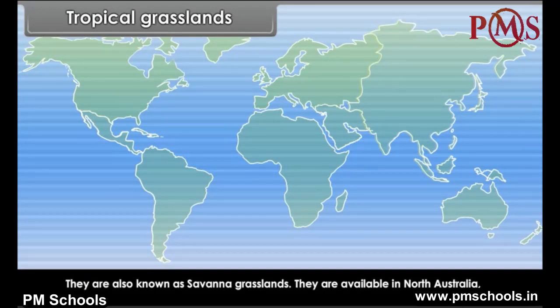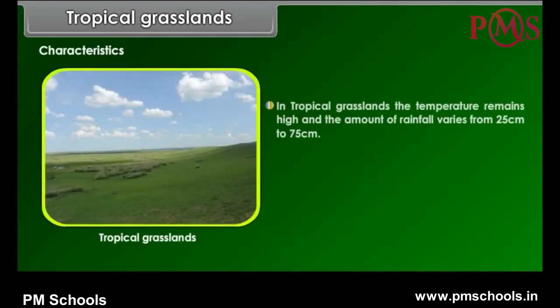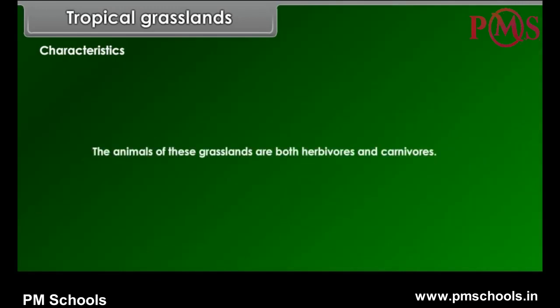Tropical Grasslands. They are also known as Savannah grasslands. They are available in North Australia, Central America, Brazilian Highlands, parts of Bolivia, Paraguay, Argentina and in African areas. Characteristics: In tropical grasslands, the temperature remains high and the amount of rainfall varies from 25 cm to 75 cm. Tall and thick grass grows here with scattered trees. Cattle rearing is carried out on these grasslands. The animals of these grasslands are both herbivores and carnivores.